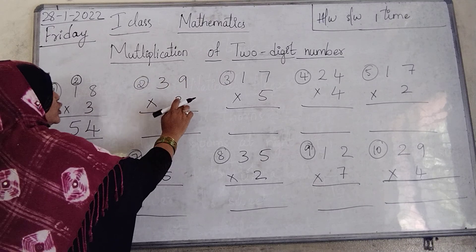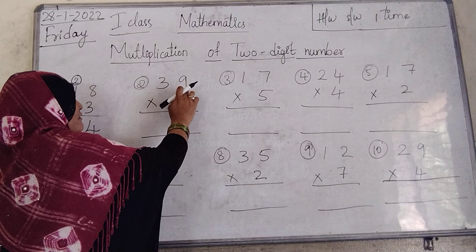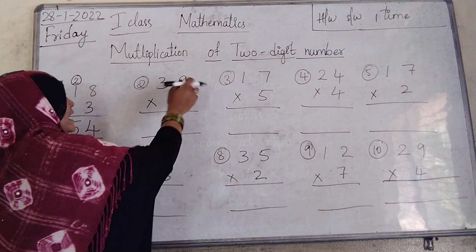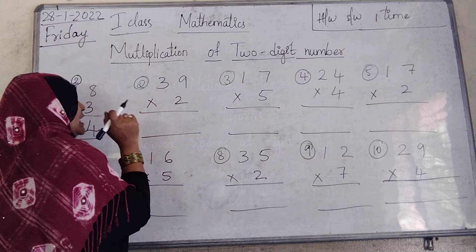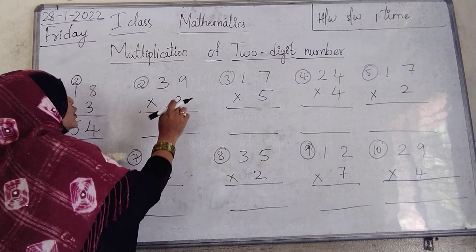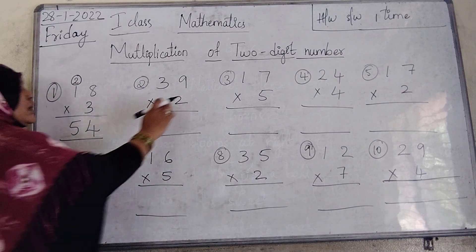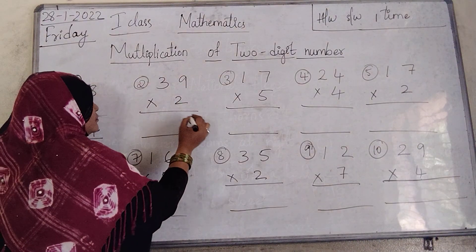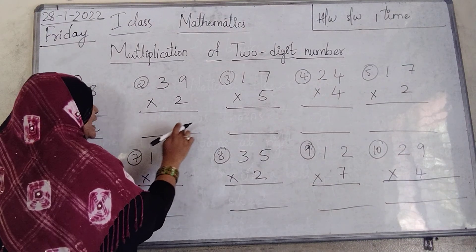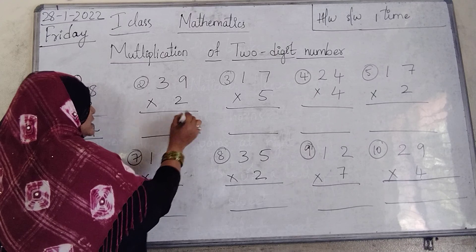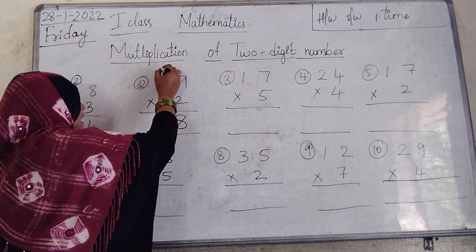Next: 39 into 2. Which number is there in the 1st place? 9. And in the 10th place? 3. With which number are we multiplying? 2. We have to use the 2 times table here. 2 nines are 18. Which number do we write in the 1st place? 8. And we carry 1 to the 10th place, above the 3.